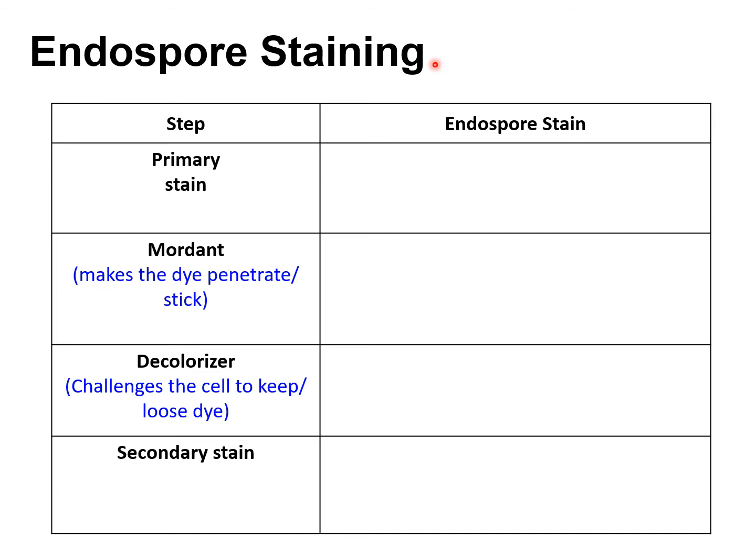We call them endospores because they are produced inside the bacteria cells. They're kind of like time capsules. The endospore will stay dormant, and eventually the bacteria will die. Once the endospore senses that nutrients are sufficient and conditions are favorable, it will grow back into the vegetative bacteria.